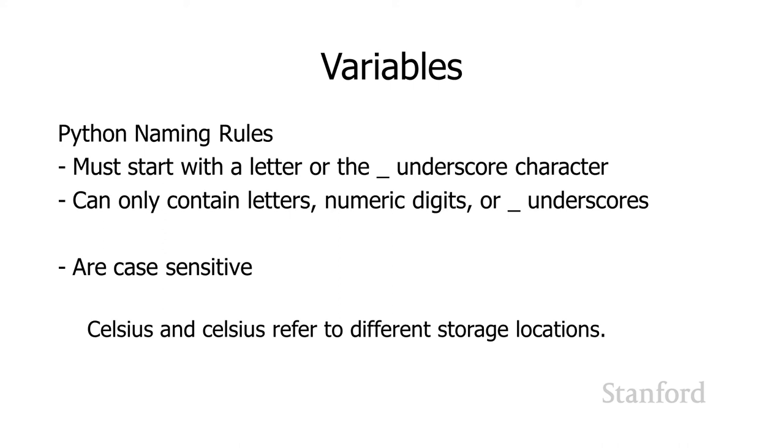They are case sensitive. If I have Celsius with a capital C and Celsius with a lowercase c, these are going to refer to different storage locations. If I store something in Celsius with a capital C and then I have a formula that uses Celsius with a lowercase c, that's not going to work because it's going to try and retrieve from the Celsius lowercase c location, not the Celsius with a capital C. That's definitely something to pay attention to. Some programming languages are case sensitive and some are not.